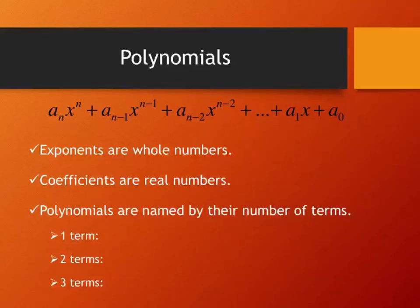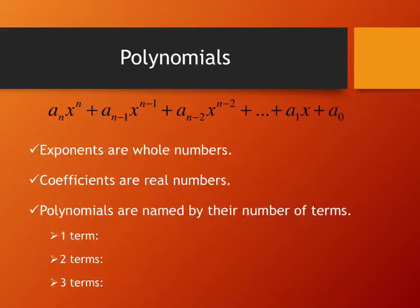The coefficients — all those a's at the beginning of terms — are just real numbers. While they could technically be radicals or pi, they usually aren't. Sometimes they're fractions or decimals, but most of the time they're just positive and negative whole numbers — integers.